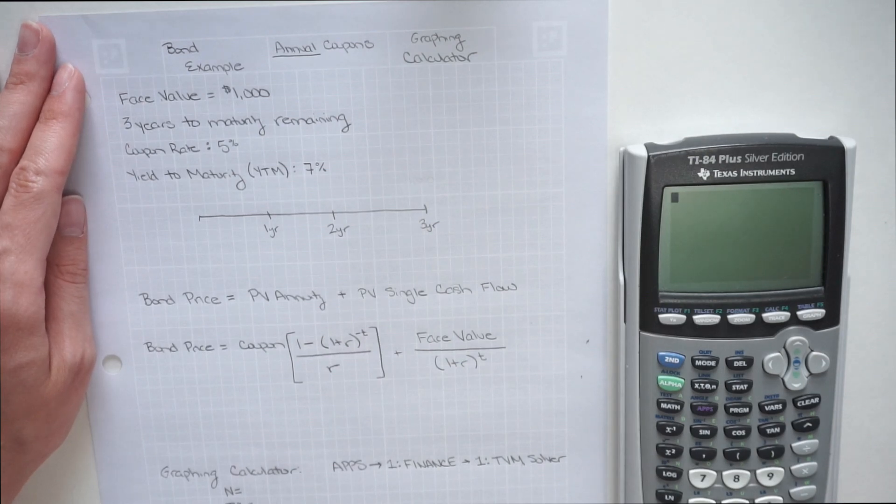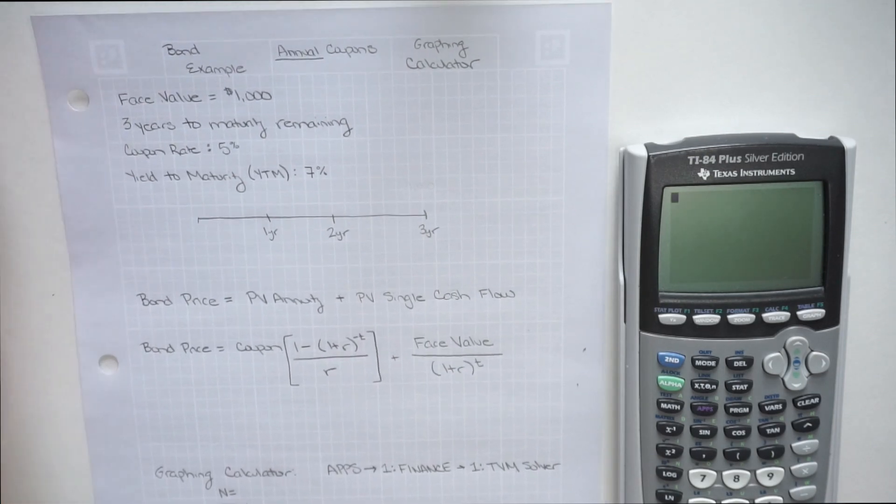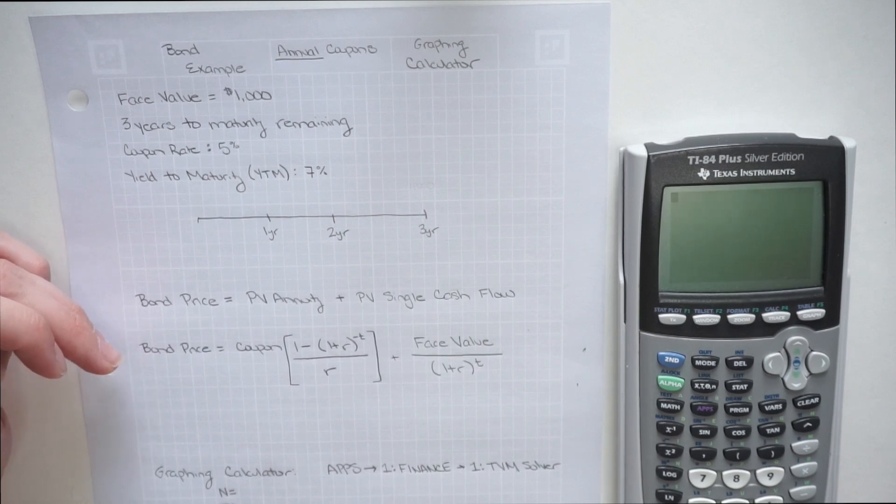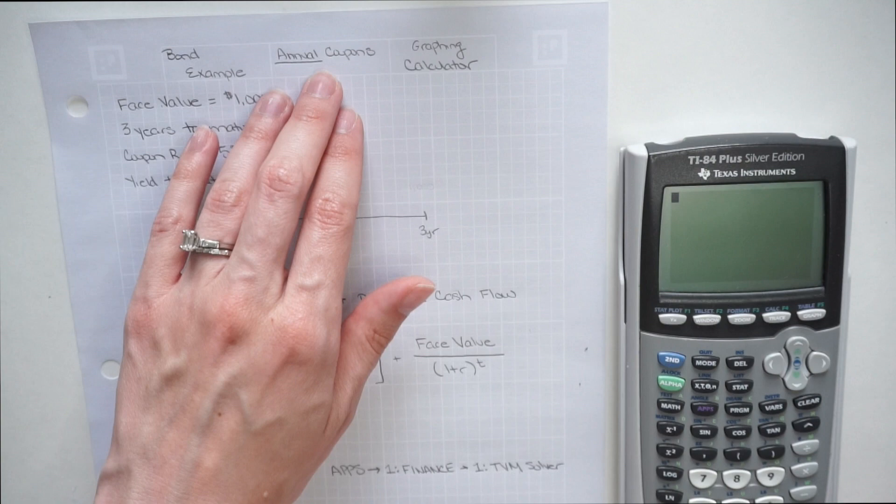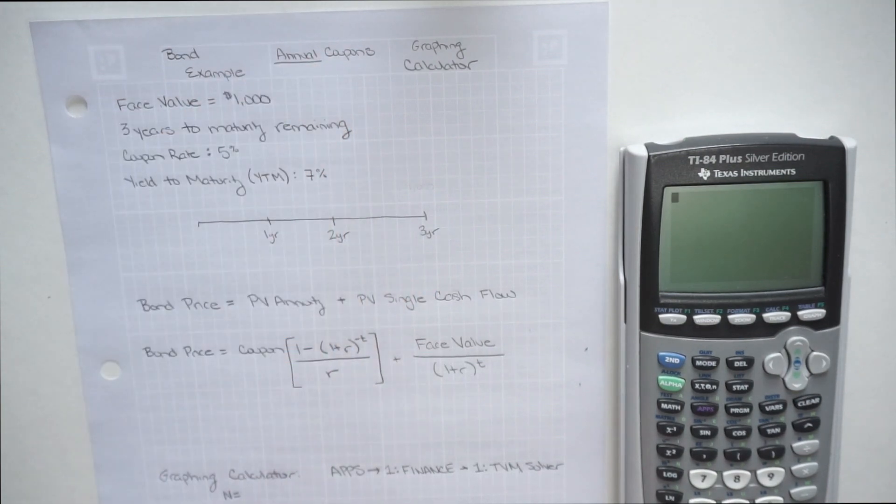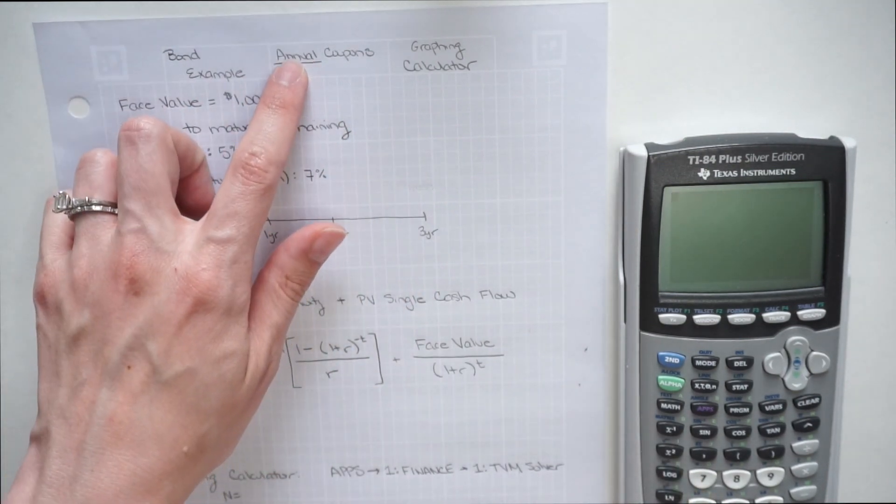Hello everyone, and welcome back to Introduction to Finance. Today I'm going to be showing one application of the bond price equation. Typically in an Introduction to Finance or Principles of Finance course, you're going to see two types of bond problems. You're going to start off with ones with annual coupons, then you're going to build onto that and end up with semi-annual coupons.